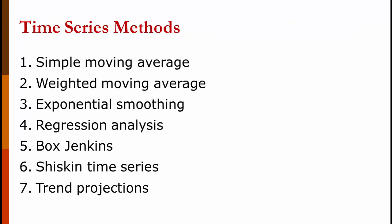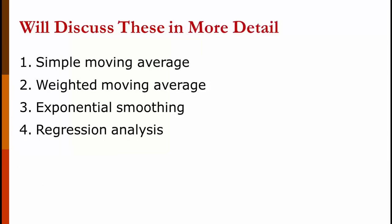In general, there are seven time series methods. Simple moving averages. Weighted moving averages. Although, we will find out later that simple moving averages are just a special case of weighted moving averages. Exponential smoothing. And there are several different types of exponential smoothing. There's simple, trend-adjusted, and Winters exponential smoothing. Regression analysis. And there's simple and multiple regression. We will discuss four of these categories in more detail. Simple moving averages. Weighted moving averages. Exponential smoothing. And regression analysis.